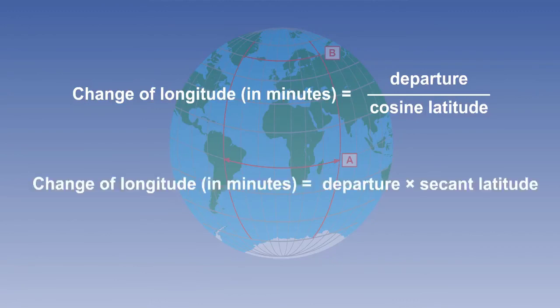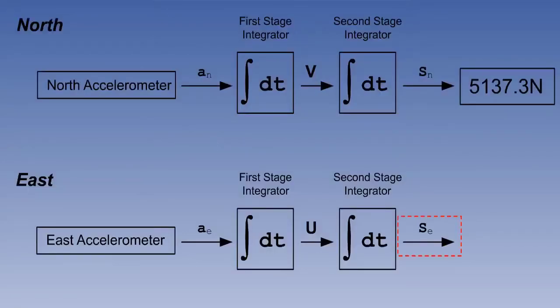However, there is a mathematical function called the secant, which is simply the reciprocal of cosine. For instance, the cosine of 60 degrees is 0.5, so the secant will be 1 over 0.5, which is 2. So we can rewrite the formula as change of longitude in minutes equals departure times secant latitude. This gives us a computing method for calculating the change of longitude.